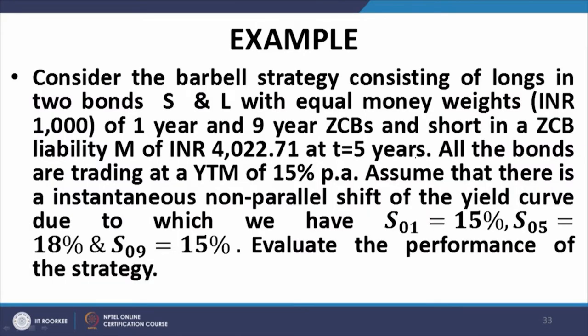All the bonds are trading at a YTM of 15 percent per annum. Assume that there is an instantaneous non-parallel shift of the yield curve due to which the spot rates change as follows: S01 is equal to 15 percent, S05 is equal to 18 percent, and S09 is equal to 15 percent.